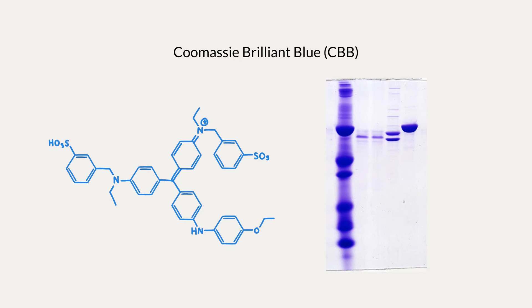Another way to detect proteins is by using a reagent called Coomassie Brilliant Blue. Coomassie is frequently used for staining proteins in polyacrylamide gels so that we can visualize them. It's a conjugated organic molecule that has a pinwheel-like chemical structure, and is characterized as a tri-phenylmethane dye because it has three phenylmethane groups, which makes it good at absorbing light and gives it its blue color. When protein is fixed on a gel, we add the Coomassie Blue and it binds non-specifically to wherever there's protein on the gel.